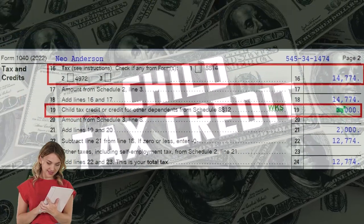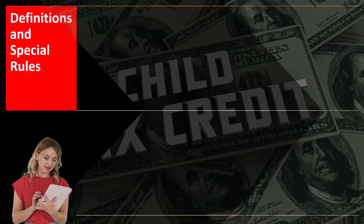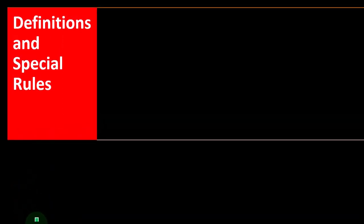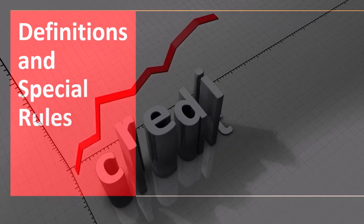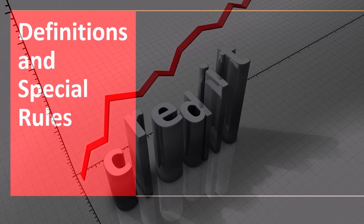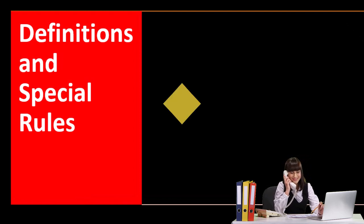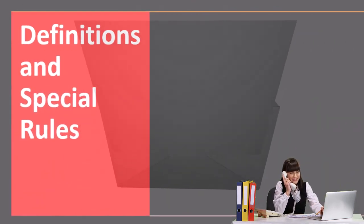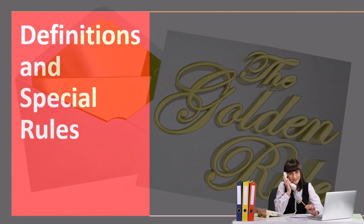This is the key line we typically think of when thinking about these credits. Now, it's fairly straightforward to determine whether someone qualifies for a credit and what kind — the child tax credit or the other dependent credit. But there can be gray areas; for example, joint custody situations. In order to address those items, we go into the definitions and special rules.